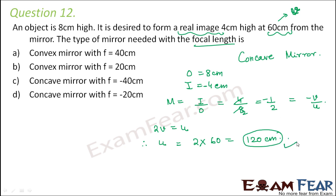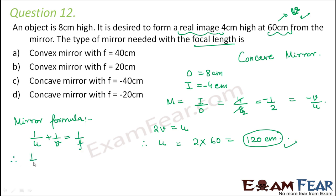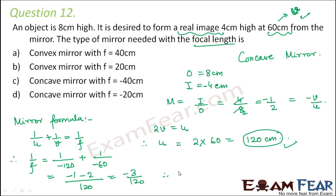Now we know the object distance and the image distance, so we can find the focal length using the mirror formula: 1/f = 1/u + 1/v. So 1/f = 1/(−120) + 1/(−60) = (−1 − 2)/120 = −3/120. Therefore f = −40 centimeters.